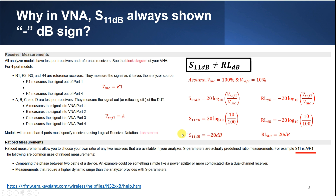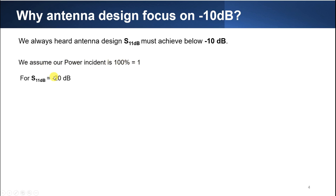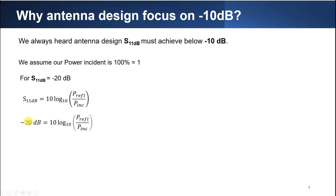In antenna design, S11 must be below negative 10 dB. To understand why, assume power incident equals 1 (normalized to 100). If S11 equals negative 20 dB, then using S11 = 10·log(P_reflected / P_incident) - 10·log because this is power - we can rearrange to solve for P_reflected.